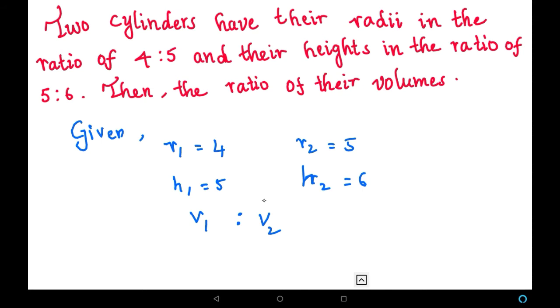So let us start solving it. Volume 1 is to volume 2 is nothing but volume 1 formula, that is pi R1 squared H1. That is pi into R squared, that is 4R. Because if it is in ratio, we have to take some variable beside because we don't know the exact value of that radius.